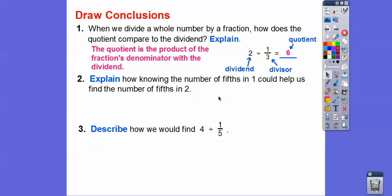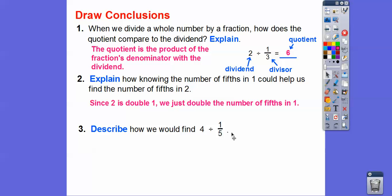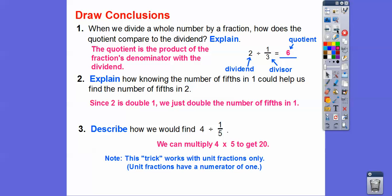Explain how knowing the number of fifths in one could help us find the number of fifths in two. If we knew there are five fifths in one, we just double that, since two is double one. If it said how many fifths are in three, we'd triple it. To find four divided by one fifth, the shortcut is to multiply four times five, giving us 20. This trick works with unit fractions only — when dividing by a unit fraction, just multiply the denominator times the whole number.